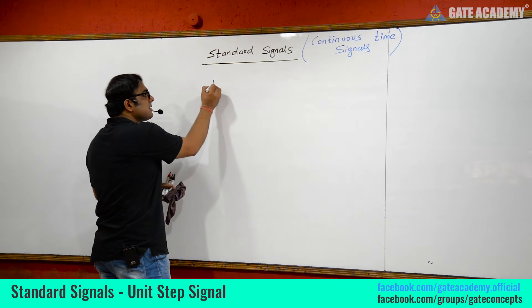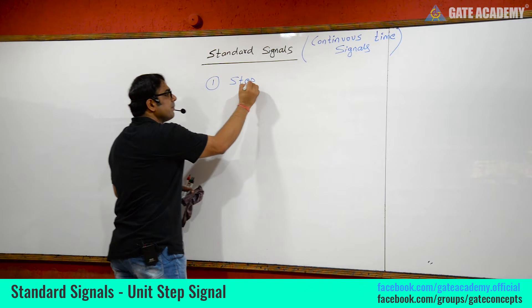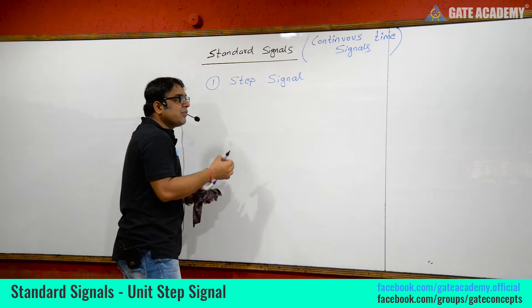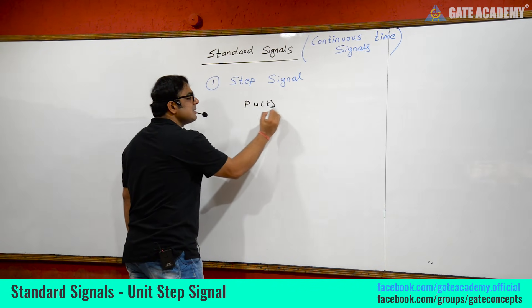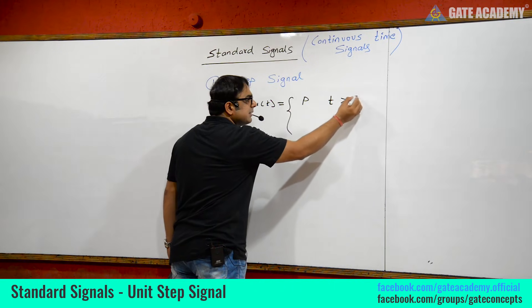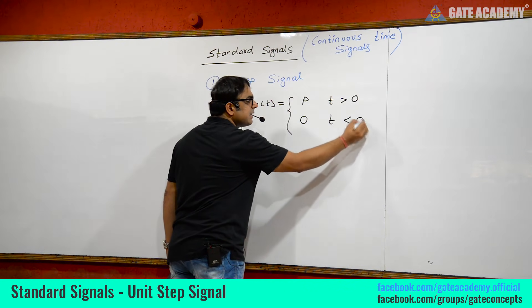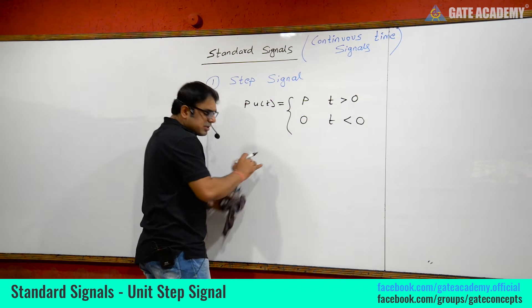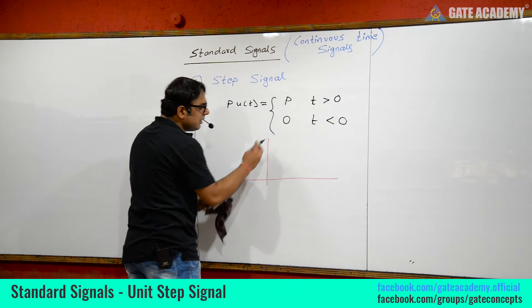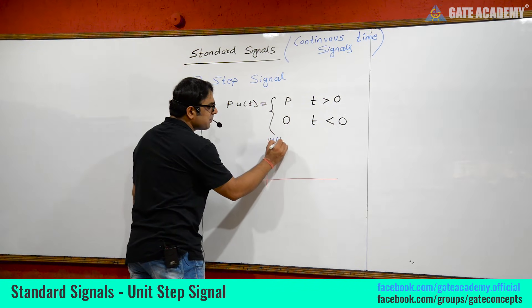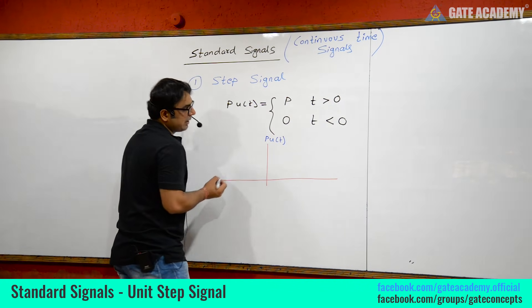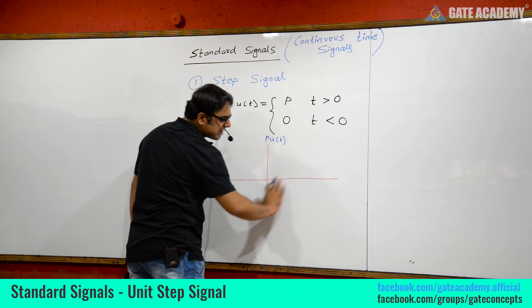Let's start from the basic standard signal, which is the step signal. The step signal's basic definition is: p times u(t) is equal to p for time greater than 0, and equal to 0 for time less than 0. Why do we call it a step signal? It will be a waveform like a step shape, which will become clear when we draw it.